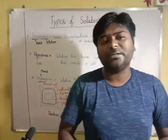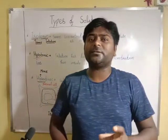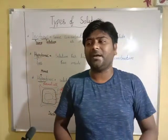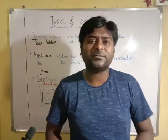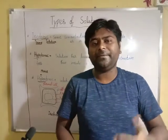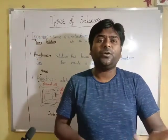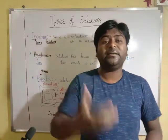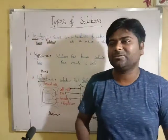First, when we place any plant cell in isotonic solution, both sides have the same concentration. So whenever we have the same concentration, there is no change and the cell retains its normal shape. That is the concept.